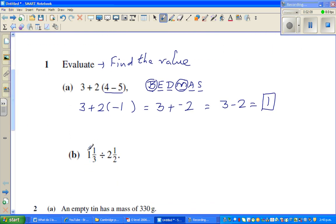Question number 1b. This is 1 and 1 third. 1 whole is 3 thirds. So this is 3 thirds and 1 third, which is 4 thirds. Divided by 2 and 1 half. 2 is 4 halves, so this is 4 halves and 1 half, which is 5 halves.